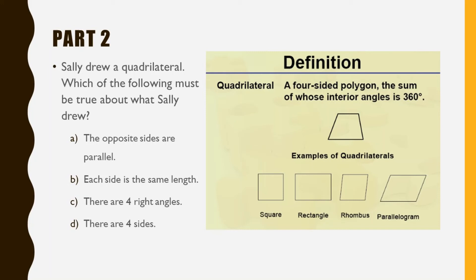There are four right angles. Does it have to have four right angles? Again, it could, but it doesn't have to.